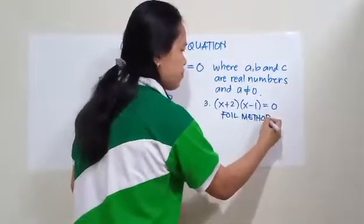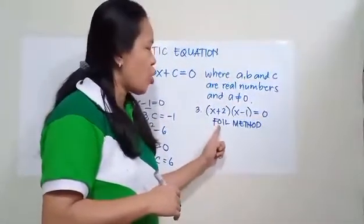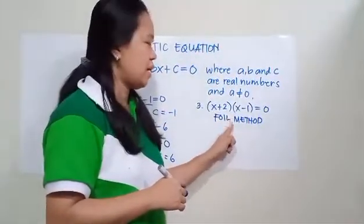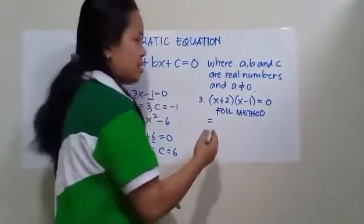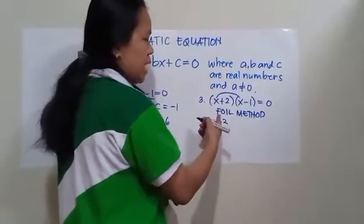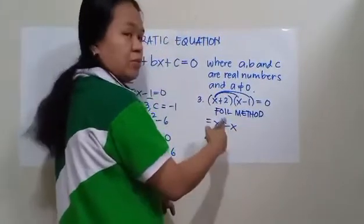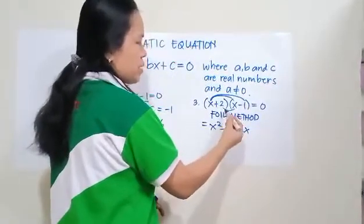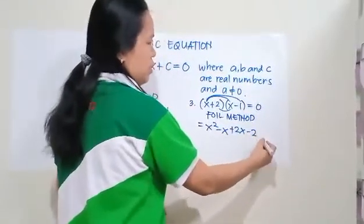The FOIL method is used when you are multiplying two binomials. F means First — multiply the first terms. O means Outer — multiply the outer terms. I means Inner — multiply the inner terms. And L means Last — multiply the last terms. So multiplying the first terms: X times X equals X squared. The outer terms: X times negative 1 equals negative X. The inner terms: 2 times X equals positive 2X. And the last terms: positive 2 times negative 1 equals negative 2. So we have X squared minus X plus 2X minus 2 equals 0.